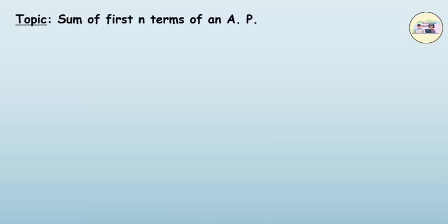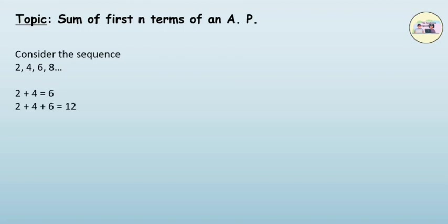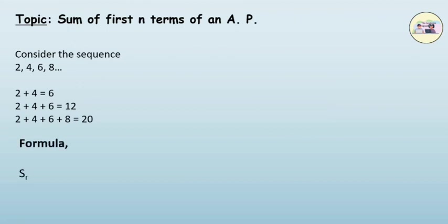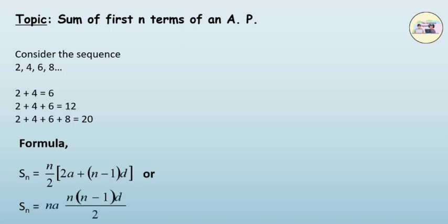Sum of first n terms of an AP. Consider the following sequence: 2, 4, 6, 8. The sum of first two terms is 2 plus 4, that is 6. The sum of first three terms is 2 plus 4 plus 6. But when someone asks the sum of the first 50 terms, the calculation is confusing. There is a formula: S(n) = n/2 × (2a + (n−1)d), or equivalently S(n) = na + n(n−1)d/2.